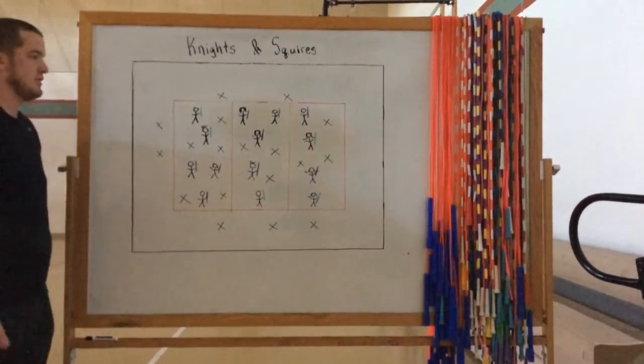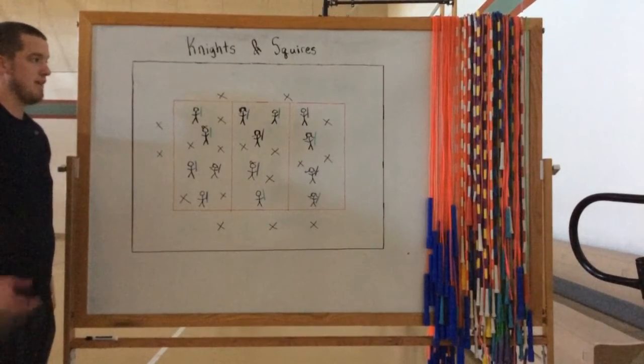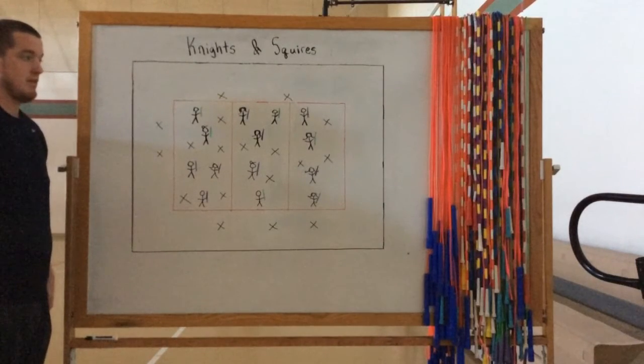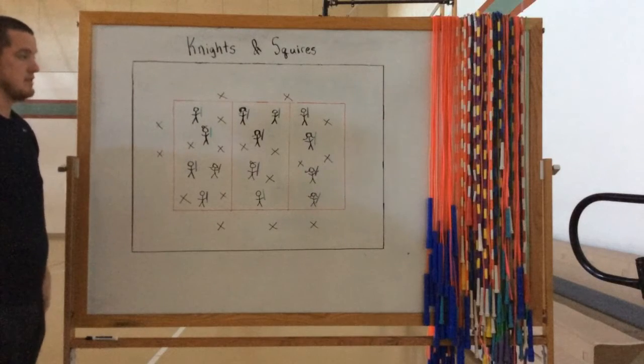Okay guys, the next game I have for you is called Knights and Squires. What you'll need for this game is as many half-pool noodles as you have. We usually use about 30-35 noodles, but we have a pretty large class size.